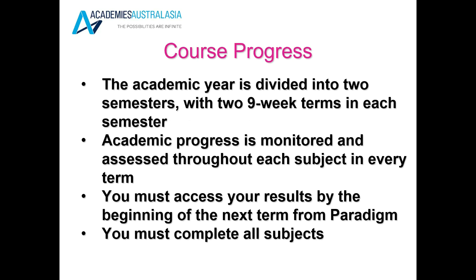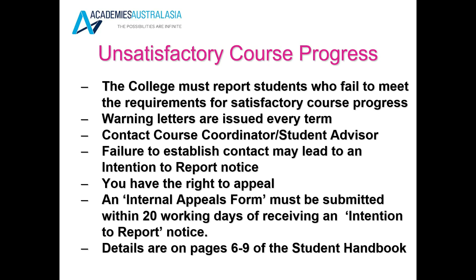Course progress. The academic year is divided into two semesters with two nine-week terms in each semester. Academic progress is monitored and assessed throughout each subject in every term. You must access your results by the beginning of the next term from Paradigm. You must complete all subjects. The college must report students who fail to meet the requirements for satisfactory course progress. Warning letters are issued every term.